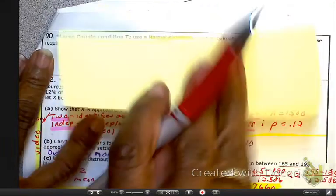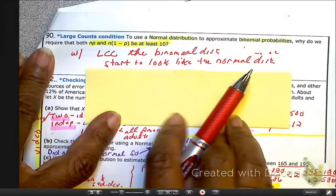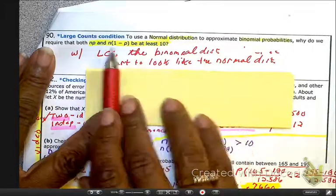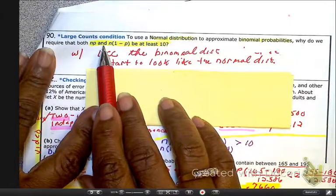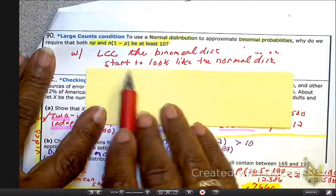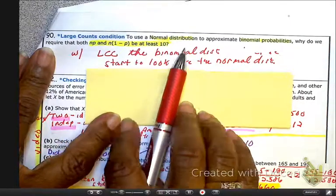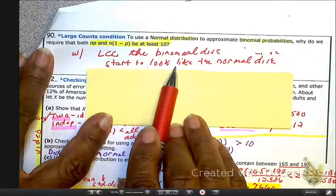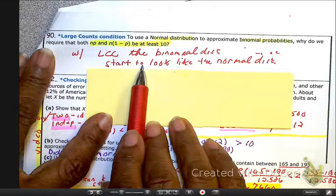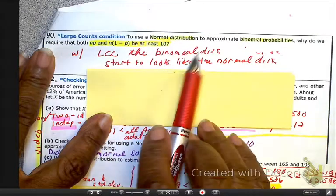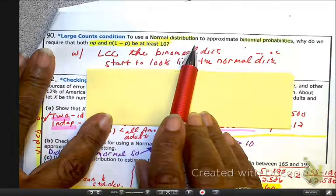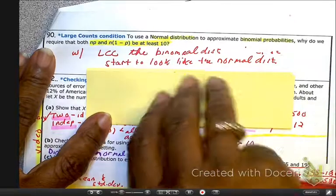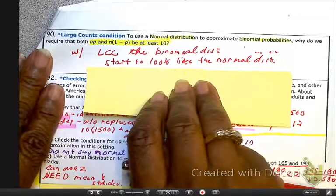And the answer is yes, we can. Because please remember, the whole premise behind LCC is to determine that something is approximately normal. That is the purpose for LCC. And if it has been met, then we can use a normal approximation in place of the binomial distribution. And of course, given that we have a large sample size.